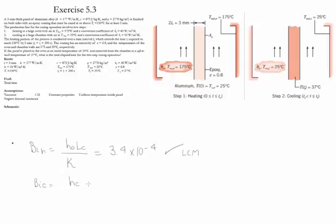So we're going to use HC, the critical length, and k. For this case the Biot number is equal to 5.85 times 10 to the negative 5. So once again we could use the LCM method.